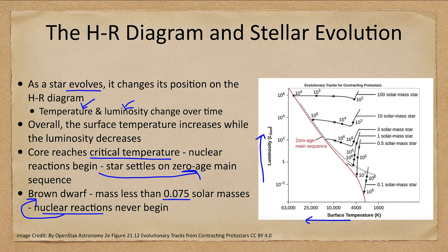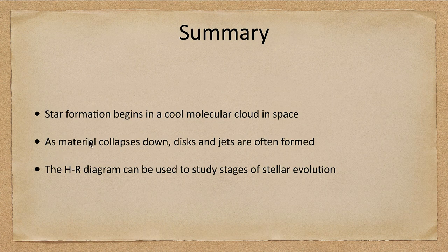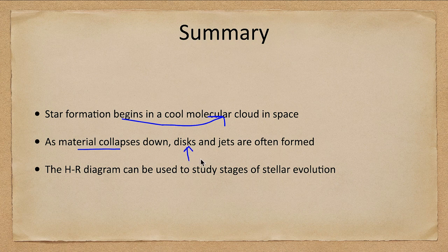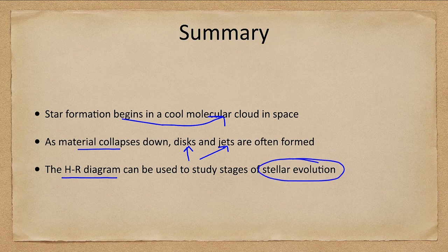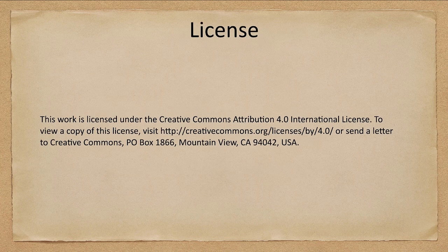In summary, star formation begins in a cool molecular cloud in space. The material collapses and we form a disk and jets of material around the star. We can use the HR diagram to study these different stages of stellar evolution. That concludes this lecture on the formation of stars — we'll be back again next time for another topic in astronomy, so until then, have a great day everyone, and I will see you in class.